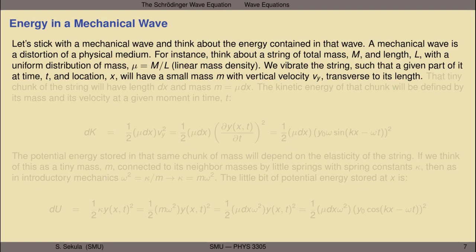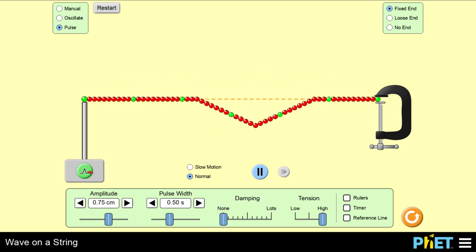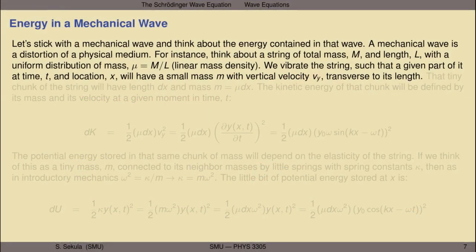Sticking with mechanical waves, let's think about the energy contained in that wave. Our model is a mechanical distortion of a physical medium — a string made from many little bits of mass hooked together as if by little springs, each with a spring constant. If we model a string with total mass M and total length L, with little bits of mass uniformly distributed, the string has a uniform linear mass density μ = M/L. No matter what chunk we look at, every chunk has the same μ, so we can always relate μ to the mass and length of any chunk.